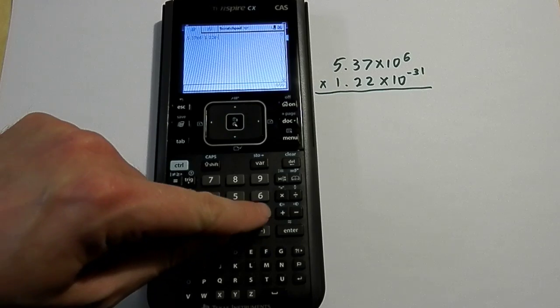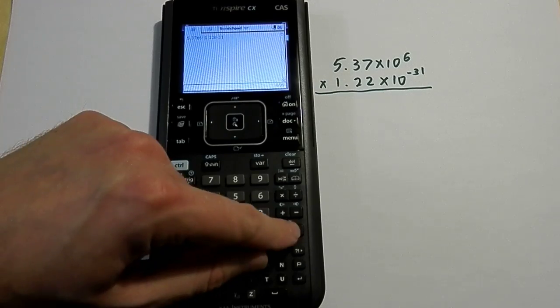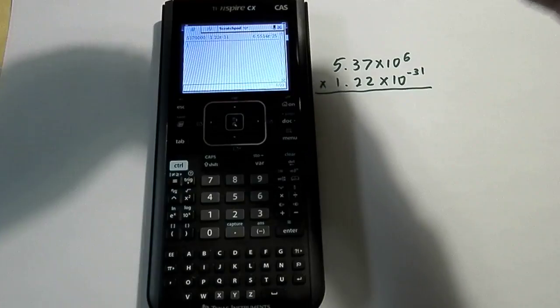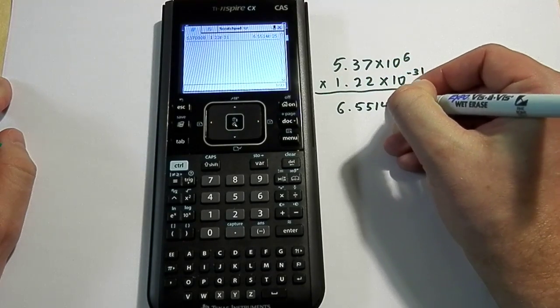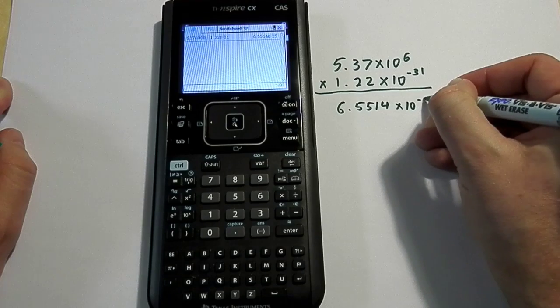So I'll hit that and then 31, enter, and I get my answer which on the display shows up as 6.5514 times 10 to the negative 25.